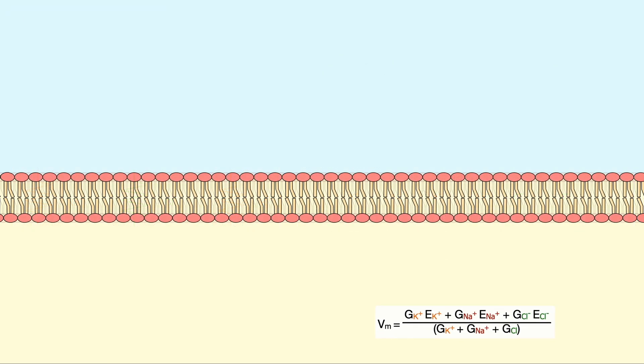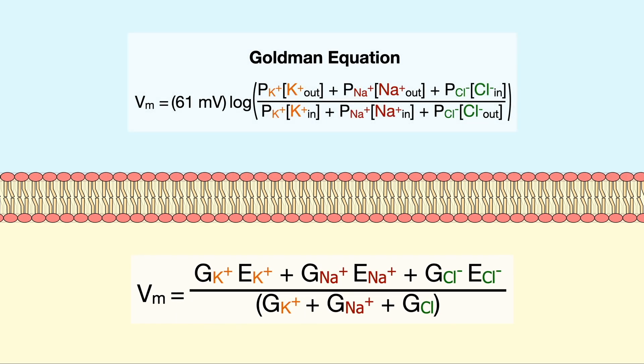The final equation we get is very reminiscent of the Goldman equation, except here we deal with conductances instead of permeabilities, but overall they both give a value for the membrane potential.